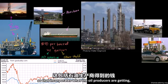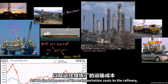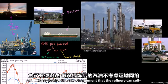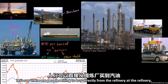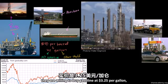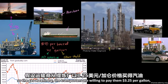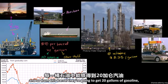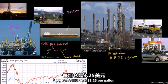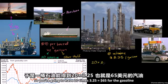That $90 per barrel incorporates what the oil producers are getting and also the transportation costs to the refinery. Let's say for the sake of argument that people are willing to buy gasoline directly from the refinery at $3.25 per gallon. From this barrel, they're going to get 20 gallons of gasoline they can sell at $3.25 per gallon — that's 20 × $3.25 = $65 for the gasoline.